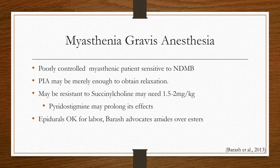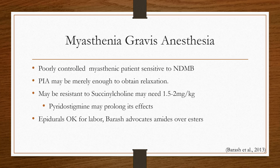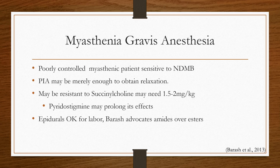How do we deal with anesthetics in myasthenia gravis? When poorly controlled, these patients are very sensitive to neuromuscular blockers. Some sources advocate use of potent inhaled anesthetics only, which can be sufficient to obtain muscle relaxation. However, going through the literature, there are certain operations where that may not be adequate — thymectomy, for example, may require an intrathoracic approach needing a double-lumen tube and single lung ventilation, which may require more than potent inhaled anesthetics to optimize the surgical field.